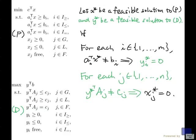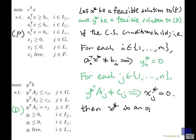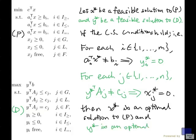So if the CS conditions hold, that is, for each i we have this, and for each j we have this, then x star is an optimal solution to P, and y star is an optimal solution to D.